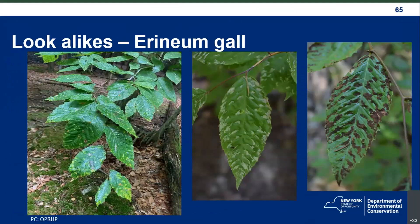There are a couple of look-alikes on the landscape. The most common one we get is an eriophyid gall, caused by an insect, which causes patchy discoloration on the top or underside of leaves. The key distinction is that eriophyid galls look like spots or patches, whereas beech leaf disease causes distinct stripes. If you know the difference between spots and stripes, you know the difference between eriophyid galls and beech leaf disease.